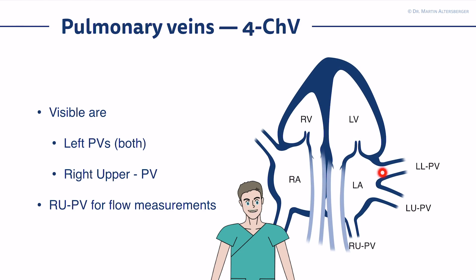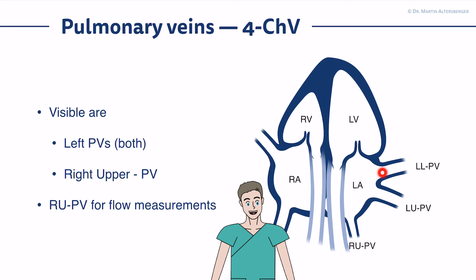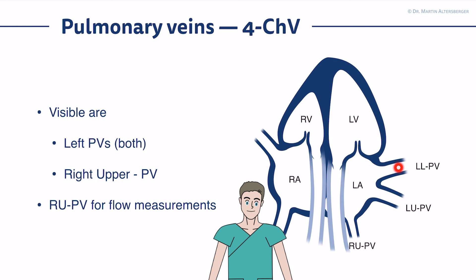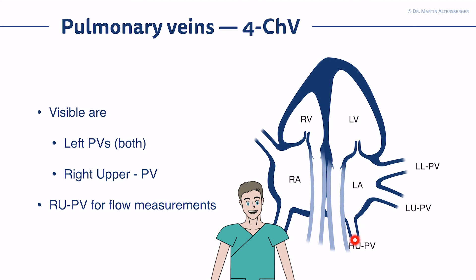Some structures I want to mention because they are important to visualize are the pulmonary veins. They are not always easy to find, but with better machines it becomes easier. In a normal anatomical setting, the left pulmonary veins — left lower and left upper — can be seen, but measurements make less sense compared to the right upper pulmonary vein, where beam orientation is optimal. The right lower pulmonary vein in TTE, from my experience, is not possible to find.